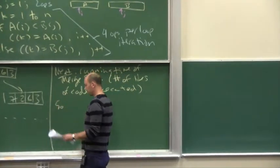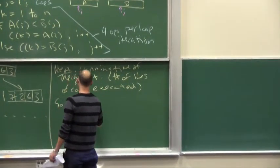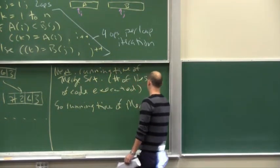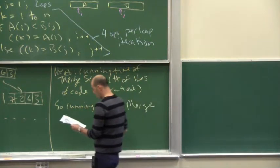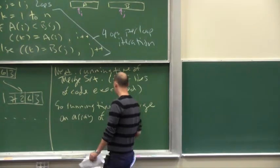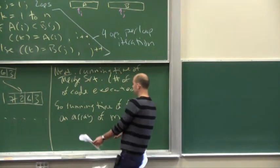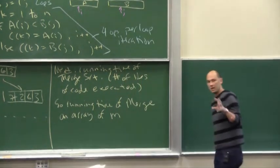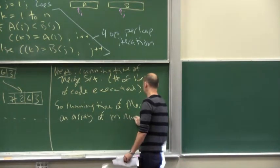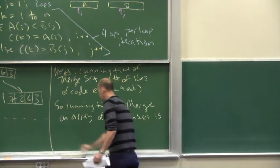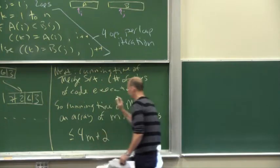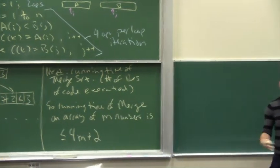So what's the upshot? The running time of merge, in general, on an array of, let's call it M numbers. Because we'll be interested in it in other sizes as well. On an array of M numbers, 4M plus 2. And that's what we argued on the top board. If the array length is M, it's going to be M iterations of the loop.